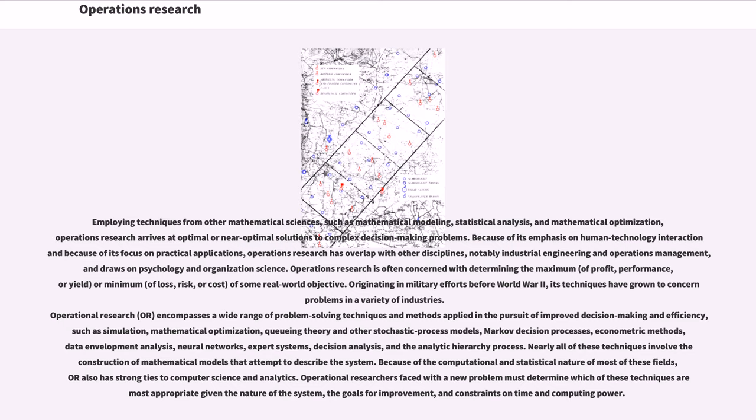Operational research encompasses a wide range of problem-solving techniques and methods applied in the pursuit of improved decision-making and efficiency, such as simulation, mathematical optimization, queueing theory and other stochastic process models, Markov decision processes, econometric methods, data envelopment analysis, neural networks, expert systems, decision analysis, and the analytic hierarchy process. Nearly all of these techniques involve construction of mathematical models that attempt to describe the system.